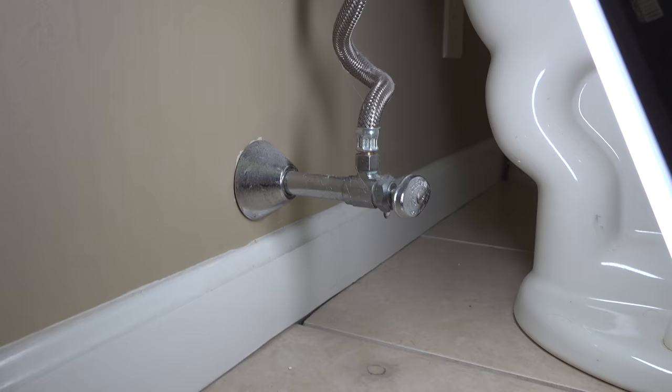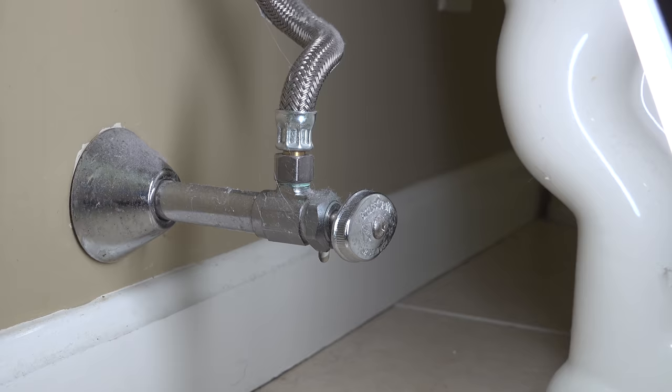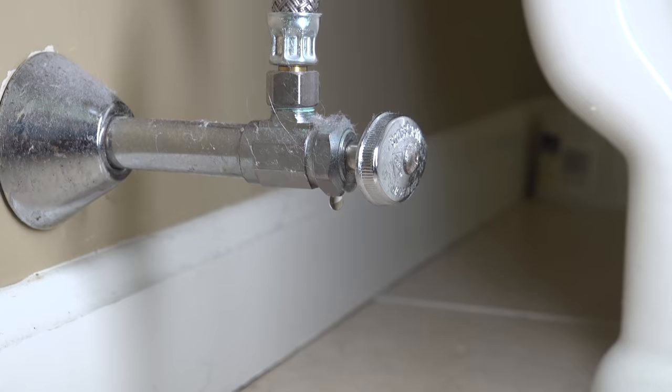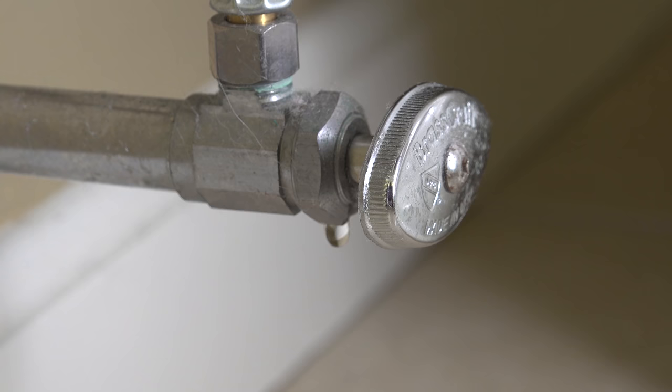This type of leak might look the same but it's completely different because this valve is totally closed, meaning that water is going into one end of the valve and then it's feeding a fixture. Now here it's going to a toilet but you'll have similar valves underneath your kitchen sink that will be feeding your faucet and you definitely want to take care of this as soon as possible.